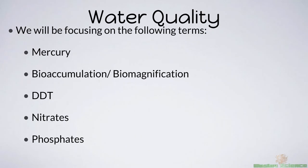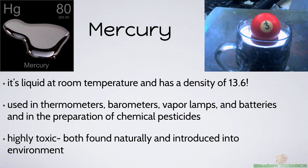In this video, we are going to discuss a couple of different types of pollution, such as mercury. We're going to talk a little bit about the story of DDT, and then at the end we're going to focus on nitrates and phosphates. Mercury is a very interesting element because it's one of the few that are a liquid at room temperature, and it also has a density of 13.6 — which is crazy. Water has a density of one, so mercury is 13.6 times more dense than water.